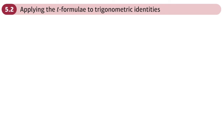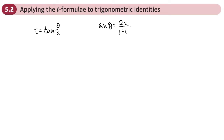This is the second section of the T formulae chapter and here we're going to be looking at applying T formulae to trig identities. You'll know from what we've done previously that we set T equal to tan(θ/2), and from that we have sine θ equals 2t over 1 plus t squared.